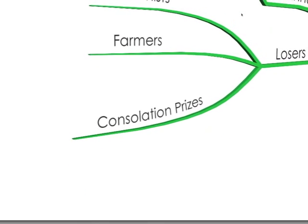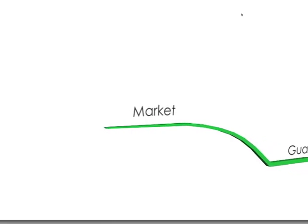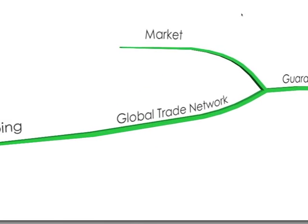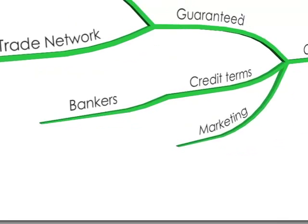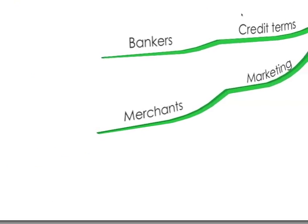However, there are consolation prizes for them. They are guaranteed access to markets and a global trade network with shipping. They're given credit terms by bankers and marketing access through merchants.